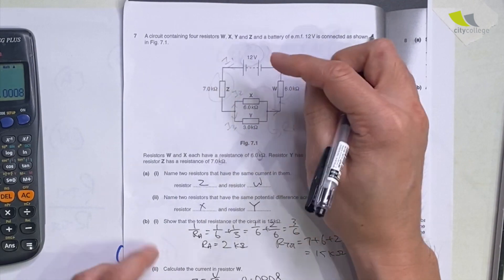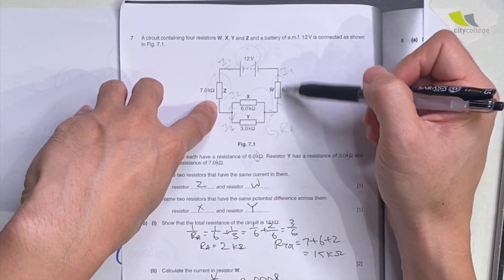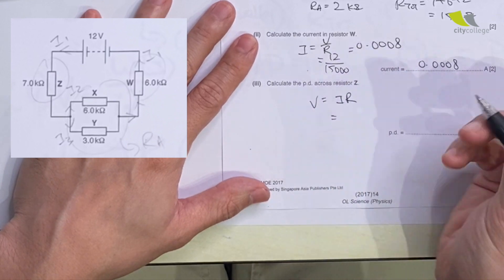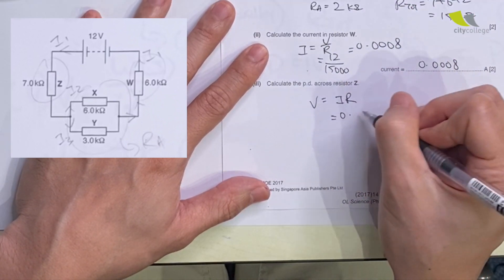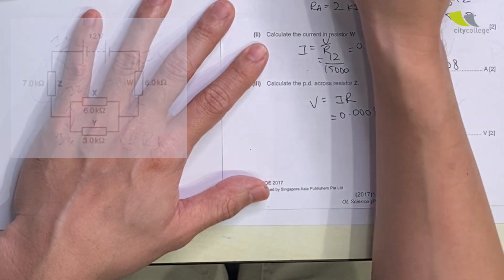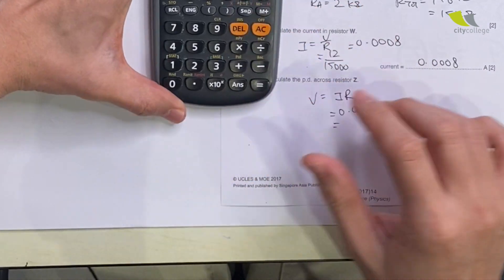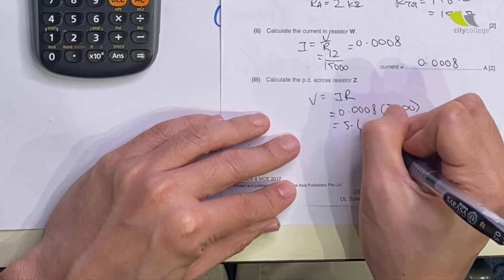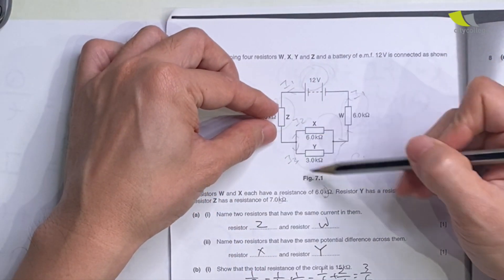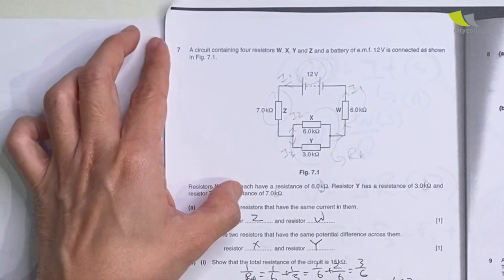One thing to note: the PD across each component cannot be larger than 12 volts, because the three PDs add together to give 12. So this answer of 5.6 volts is safe. Now let's look at the 2019 paper. It's fairly similar but in a different way — you have two resistors in series forming one set, and another set in parallel with it.